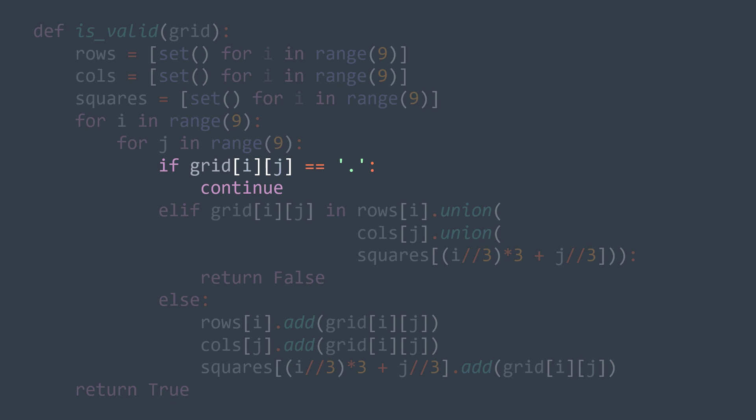Else if we can find it in rows[i], or columns[j], or squares[i÷3×3 + j÷3], we return false. Rows[i] represents the set that contains values of row i, and same logic for the column and the square.